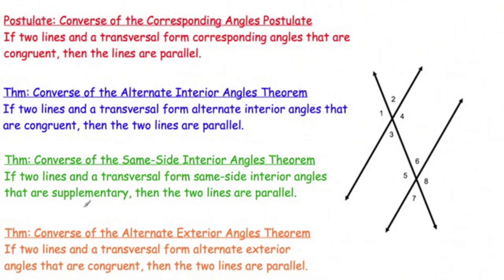Same side interior angles theorem. If two lines and a transversal form same side interior angles that are supplementary, then the two lines are parallel. So, 3 and 5 are same side interior. If they add up to 180 degrees, then yes, the lines are parallel.